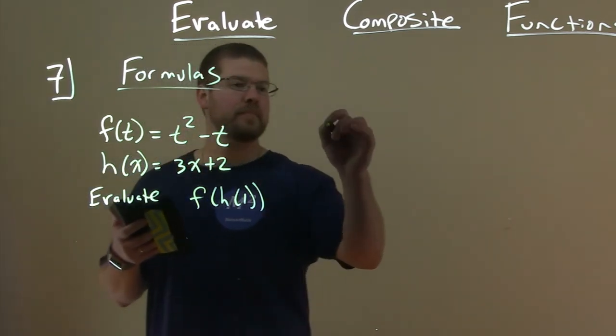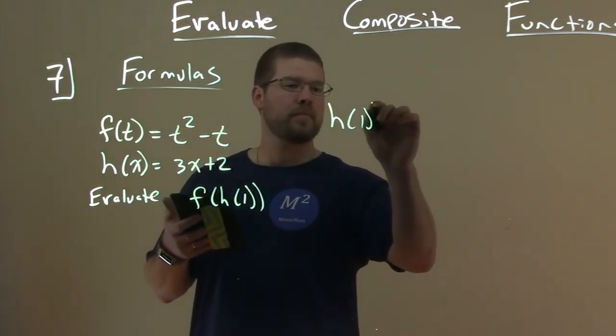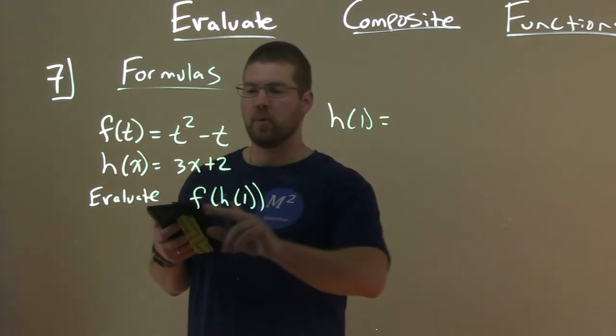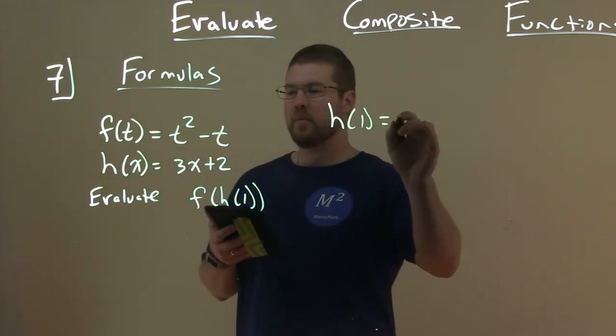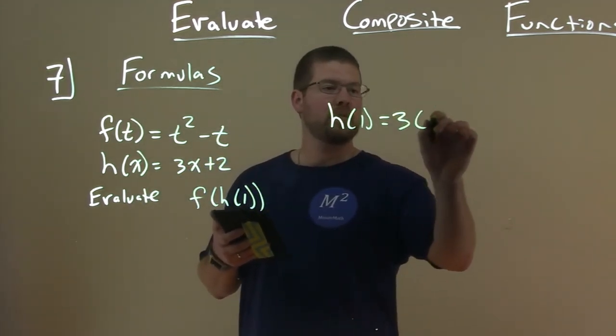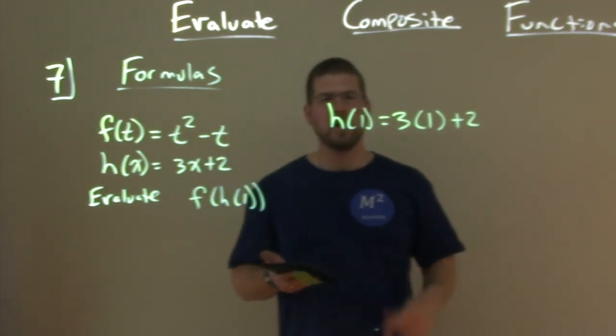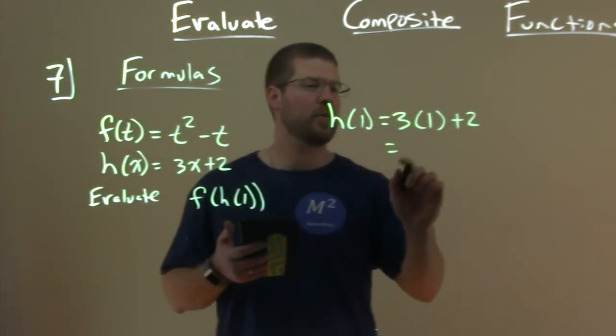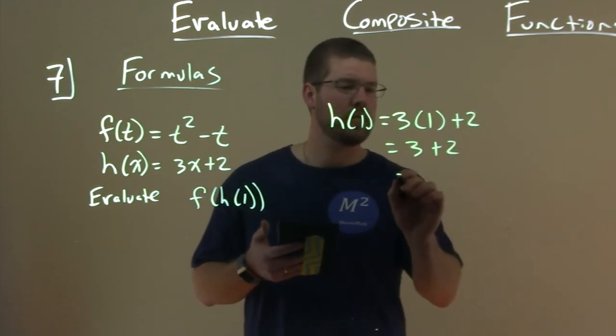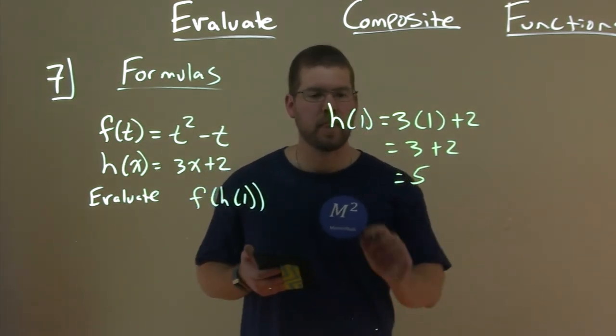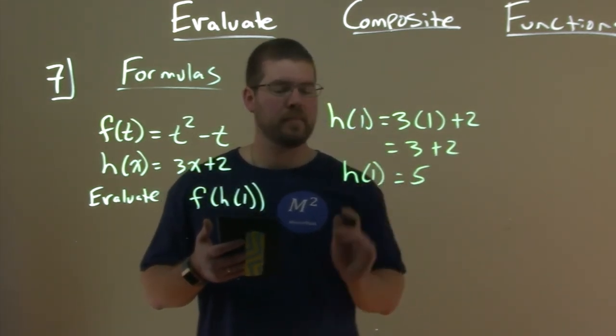All right, so what we're going to have here, f of h of 1. Well, first thing I like to do is find h of 1. So what is h of 1? Well, h of x is that 3x plus 2, and we're going to plug 1 in for x right there. So now let's simplify. 3 times 1 is 3 plus 2, and 3 plus 2 is 5. So, h of 1 equals 5.